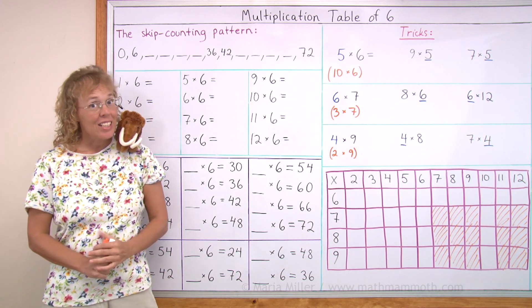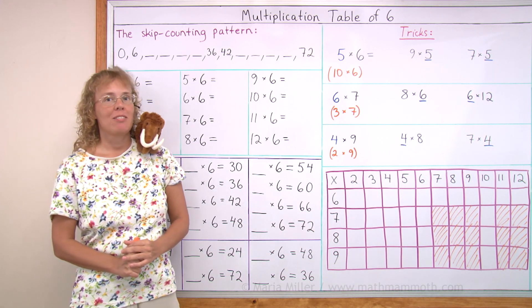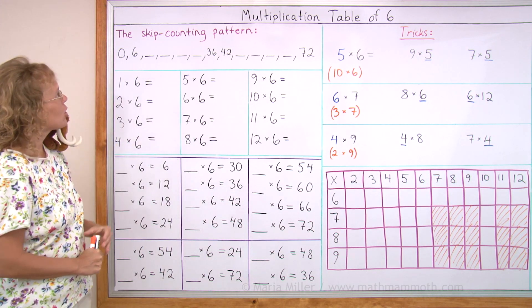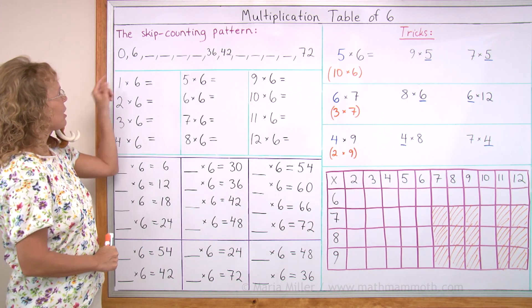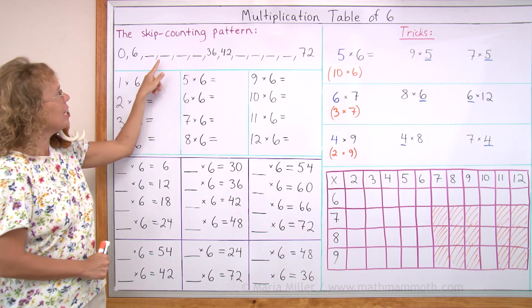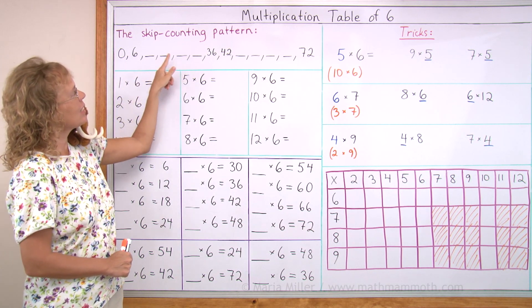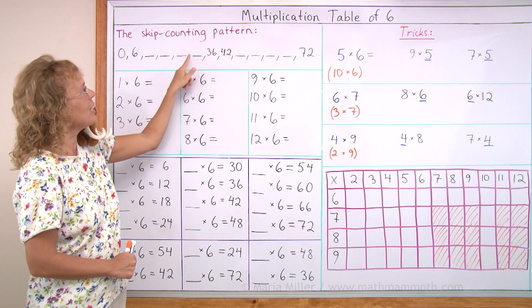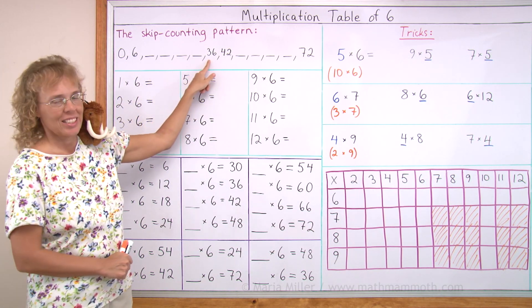And let's start with the skip counting pattern, which goes like this. We have 0, 6, 12, 18, 24, 30, 36.